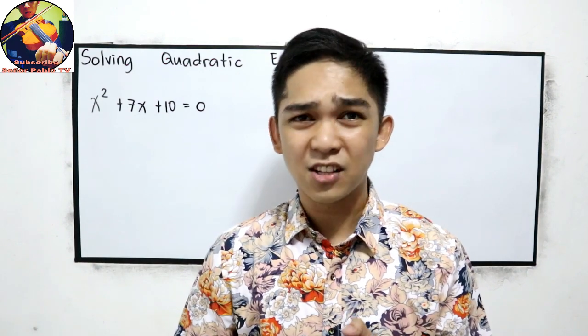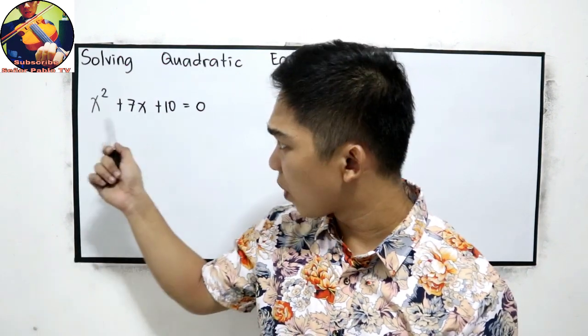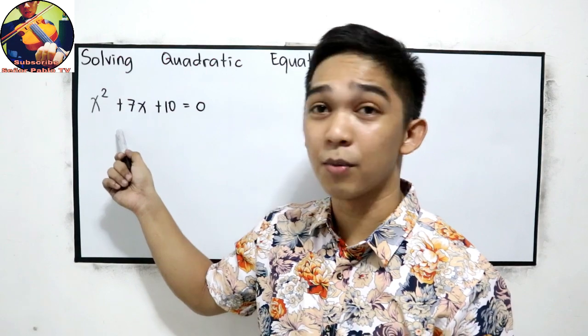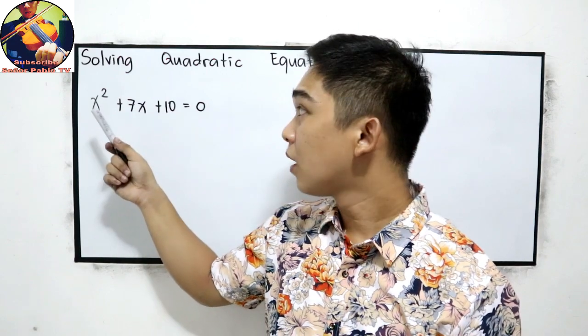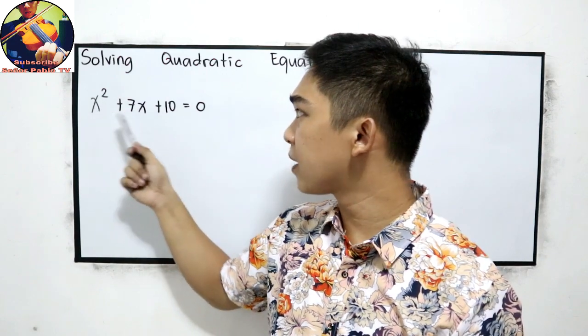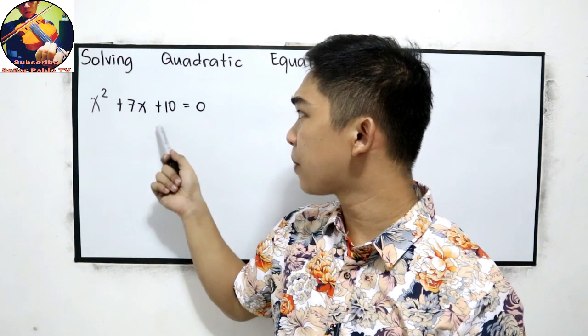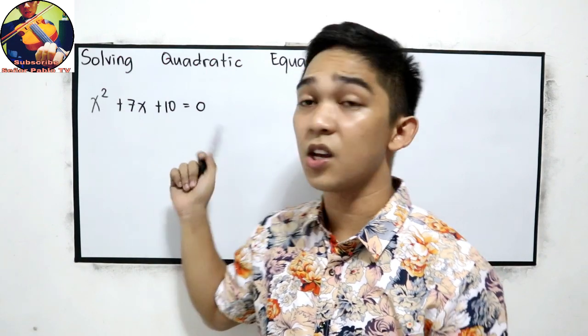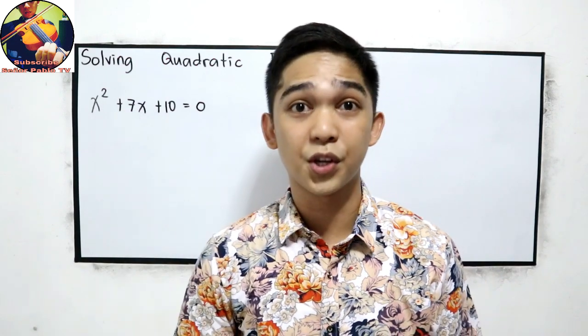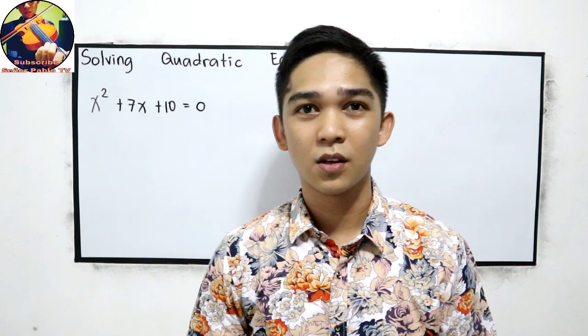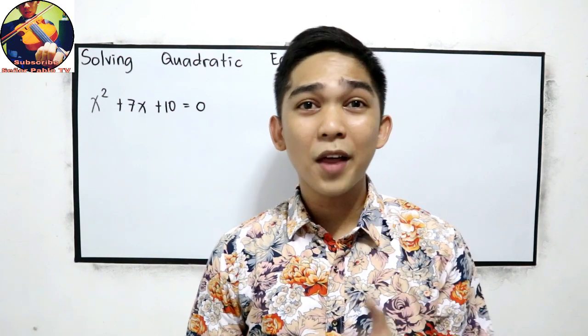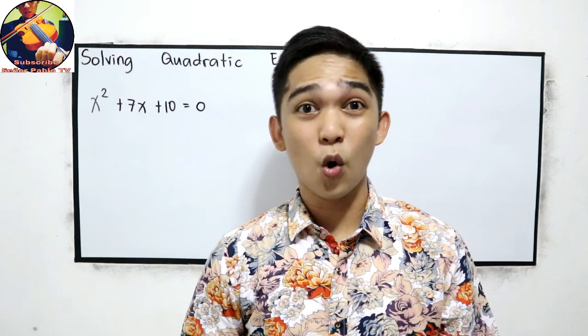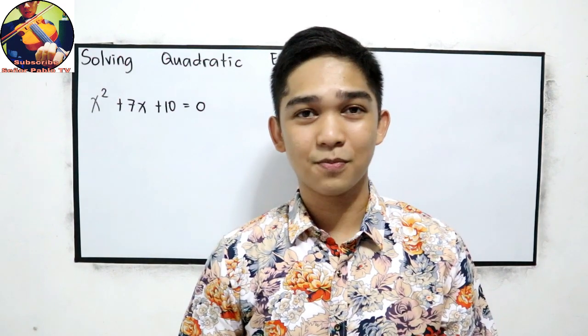What if your teacher asks you to solve this problem: x squared plus 7x plus 10 is equal to 0? What method are you going to use?